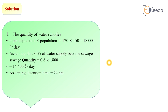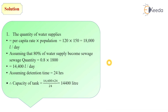We assume the detention time as 24 hours. From sewage flow and detention time, we calculate the capacity of tank. Capacity of tank equals total sewage flow per day: 14,400 into 24 divided by its detention time of 24, which equals 14,400 liters. So capacity of the septic tank is 14,400 liters.